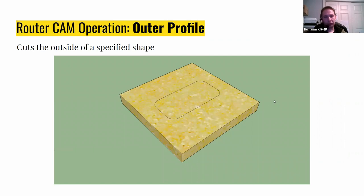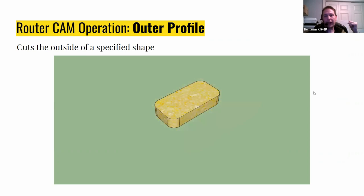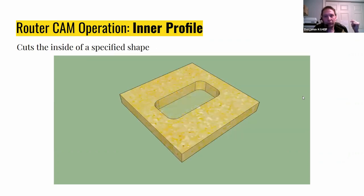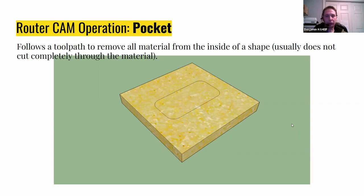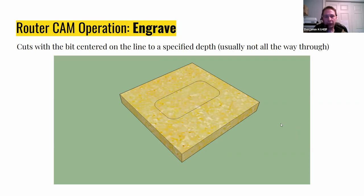Machining operations within the space of router CNCs: you have an outer profile, where you remove everything outside a particular shape; an inner profile, where you remove material inside a shape; drill, which literally just plunges down through the material to make a hole; pocketing, where you remove all the material inside an area but don't go all the way through — the machine traces out the entire area; and engraving, often used for signs, where you cut slightly into the material to create a relief.